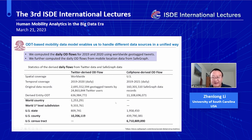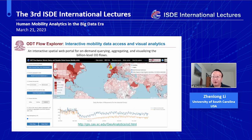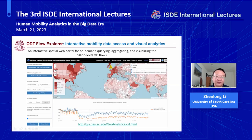We computed daily flows for two years using worldwide geotagged tweets and mobile location data from SafeGraph. The flows are available at different geographic scales: country level, state level, county level, and census tract level. The interactive spatial web portal enables on-demand querying, aggregating, and visualizing these billion-level OD flows. On the left side, you can select different data sources, choose geographic levels to analyze or download, and choose to visualize or download the data.